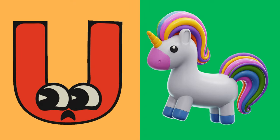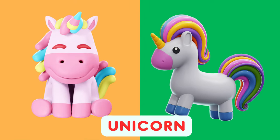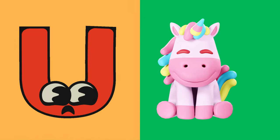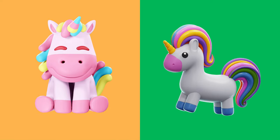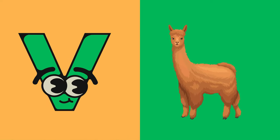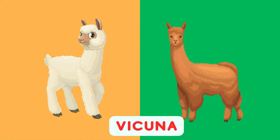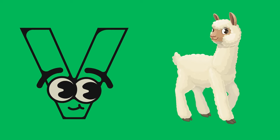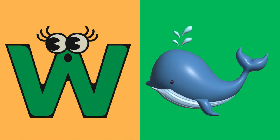U is for Unicorn, U, U, Unicorn. U is for Unicorn, U, U, U. V is for Vicuña, V, V, Vicuña. V is for Vicuña, V, V, V.